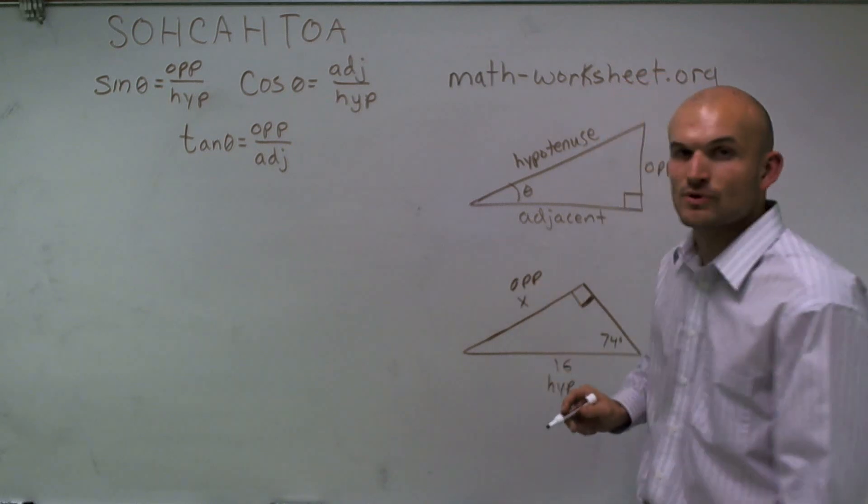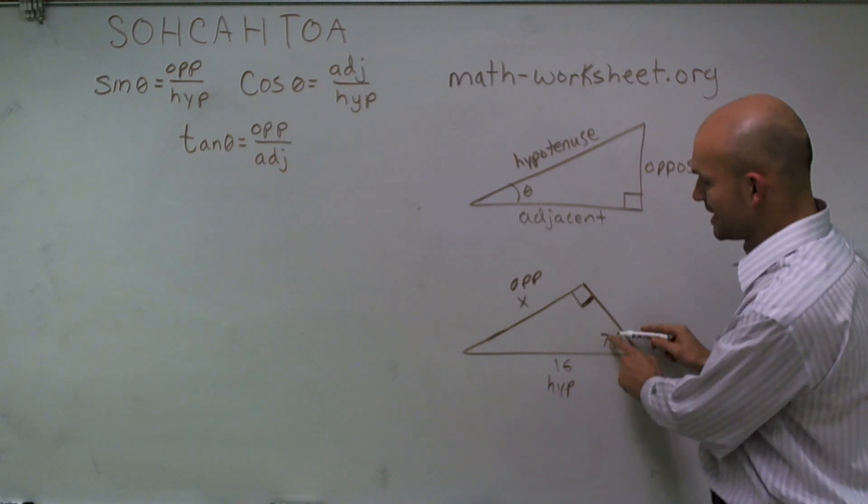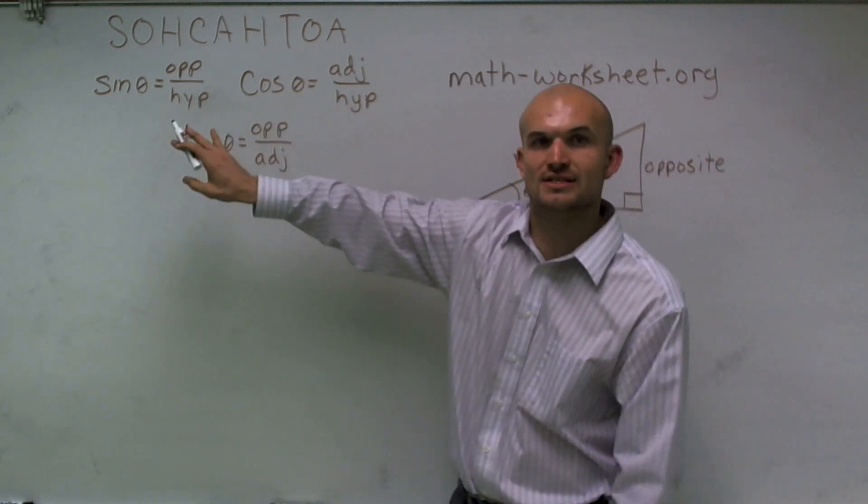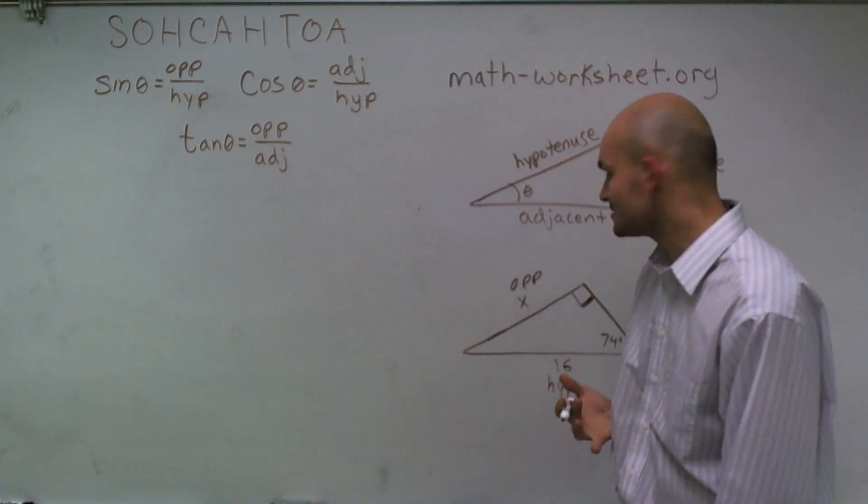To find which function I'm going to use, I'm given an opposite, a hypotenuse, and an angle. Let's look at my three functions and see which one uses an opposite and a hypotenuse.